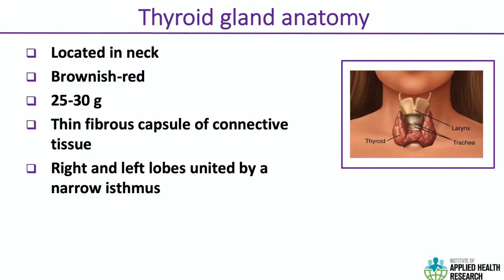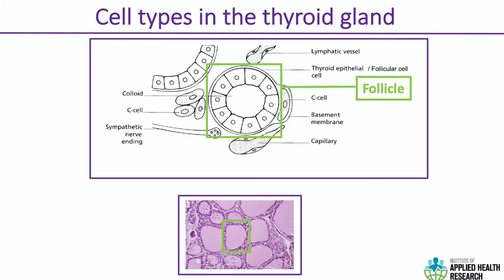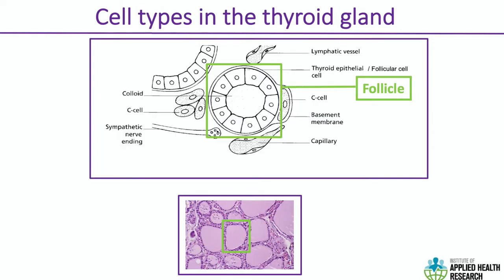Your thyroid gland is in your neck. It's a brownish-red gland that normally weighs about 25 to 30 grams. It's surrounded by a thin capsule of connective tissue and has a right and a left lobe. The bit in the middle is the isthmus that connects the two lobes. The thyroid gland is essentially made up of follicles — those are lined by follicular cells, which are the cells that produce thyroid hormones.